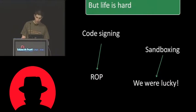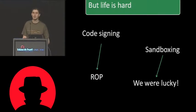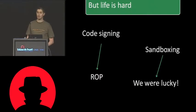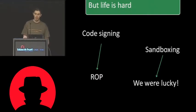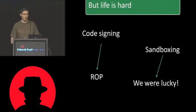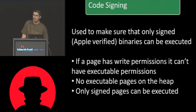When you try to write an exploit on iPhone, you have to face at least two problems. The first problem is code signing, and the second problem is sandboxing. Code signing can be solved by using return-oriented programming. As for sandboxing, in our specific case we were apparently lucky because there was a bug in the sandbox policy of mobile Safari, so we were basically able to dump the SMS database of the phone.